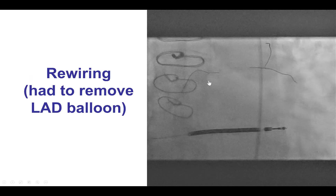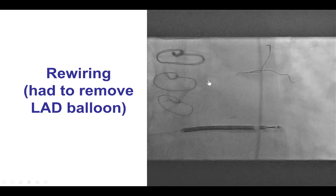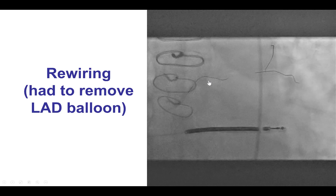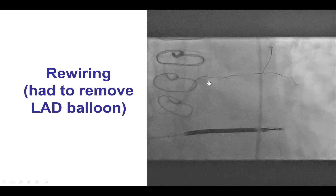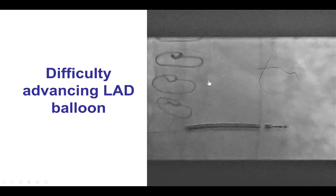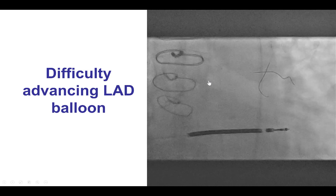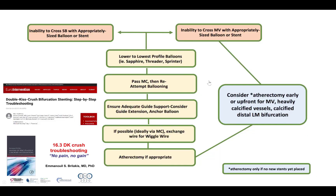However, rewiring was very challenging, and we ended up having to remove the LAD balloon. There was some difficulty delivering the wire, but eventually rewiring was successful. However, we could then not reinsert the LAD balloon. These are potential challenges with the DK crush technique — difficulty delivering balloons and stents. Solutions include using lower-profile balloons, a microcatheter, increased guide support, or a wiggle wire. Atherectomy is not an option once a stent has already been placed.